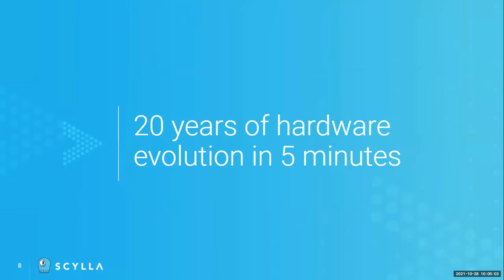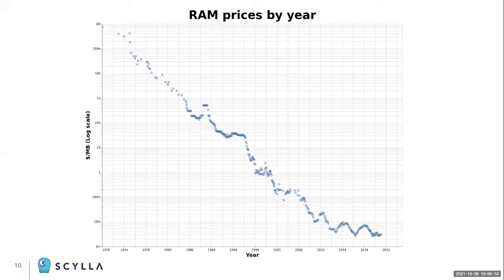Let's explain how hardware changed in the last 20 years or so. If you look at the price of RAM from 1970 to today, it has decreased exponentially — more than a 1000-fold — and this trend will continue. RAM has become very cheap compared to how it used to be, meaning a server today can have a terabyte of RAM, something that was probably unimaginable just a few years ago.